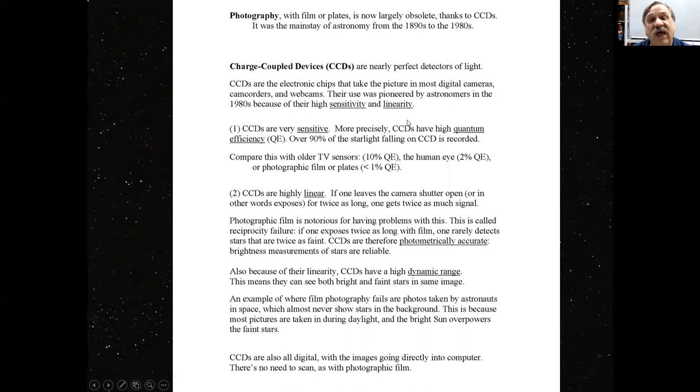CCDs are the electronic chips that take the picture in most digital cameras. Actually CMOS detectors are nowadays. I need to update this. Camcorders and webcams. Their use was pioneered by astronomers in the 1980s because of their high sensitivity and linearity. Yet another case of abstruse science paying off in the real world because if the only science you're interested in is stuff that's immediately applicable, you quickly run out of stuff to apply. So it's important to keep new stuff on the frontier and every now and then something that seems totally useless at first will seem wonderfully useful. CCDs were originally developed by computer companies as memory devices. It was only later noticed, hey, these things can detect light, too, and they're much better than old-fashioned chemical photography. CCDs are very sensitive and very linear, and this is why they've become so popular in astronomy.